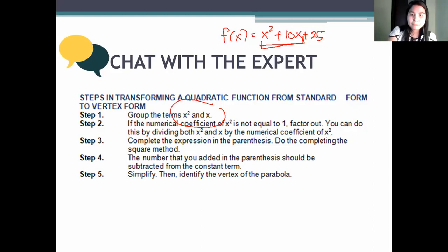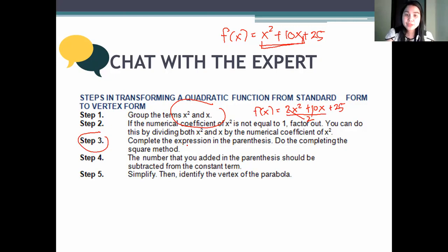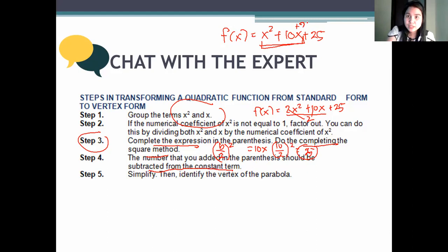For example, if we have f of x equals 2x squared plus 10x plus 25, we group and divide both terms by 2. In step number three, we complete the square: take b, divide it by 2, then square it. So for 10x, 10 divided by 2 is 5, squared gives 25. The number added inside the parenthesis must be subtracted from the constant term. Then we identify the vertex of the parabola.